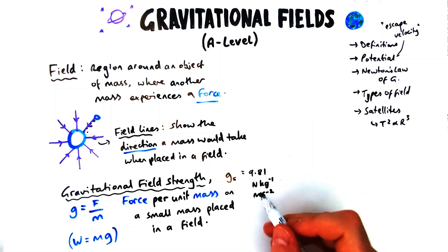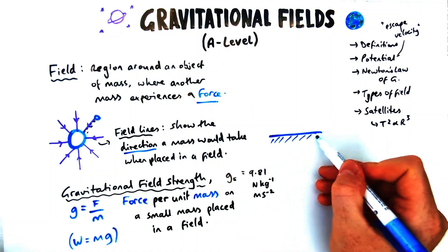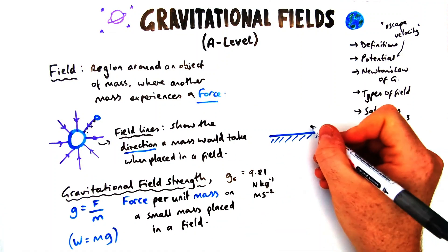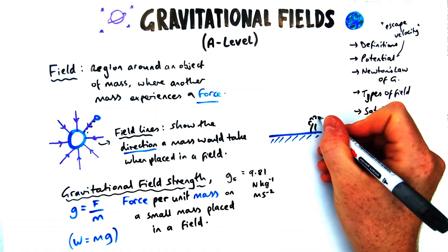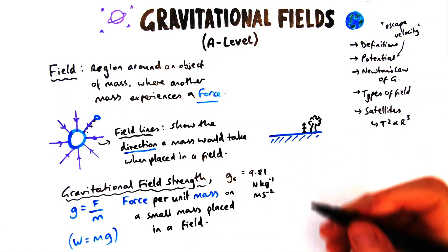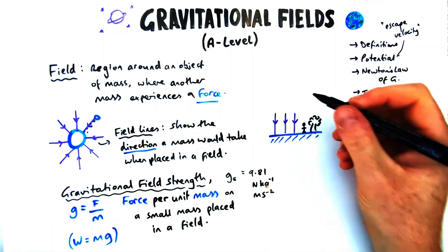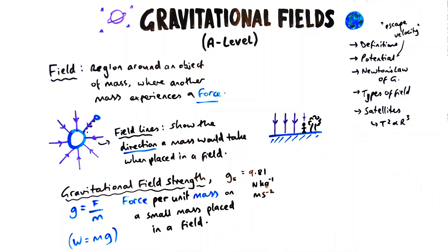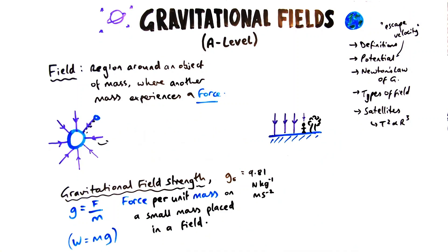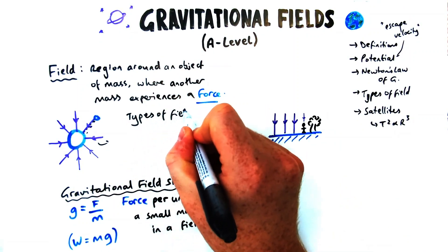It also has units of metres per second squared if you're talking about acceleration due to gravity. Most of the mechanics you've done prior to this topic will have been based around things happening close to the surface of the earth — for example, people throwing an object, on the scale of metres, say 5 or 10 metres.